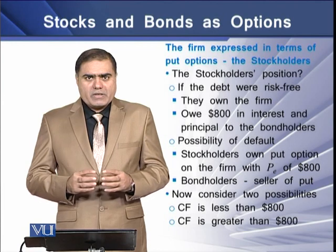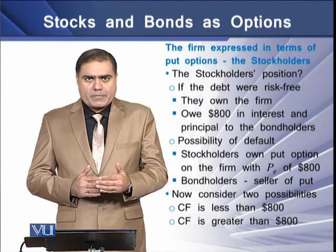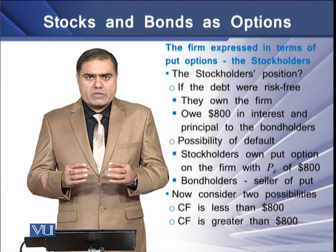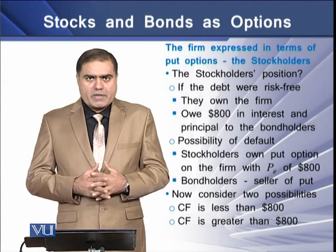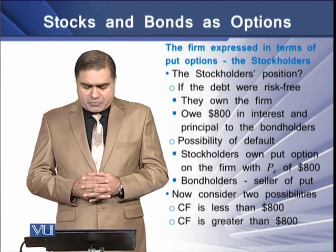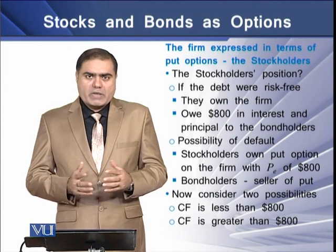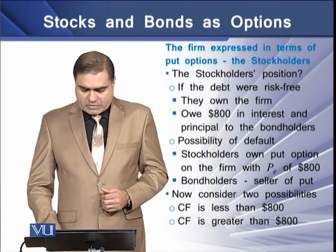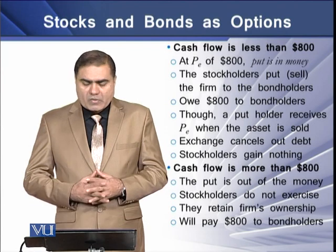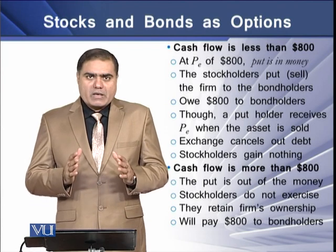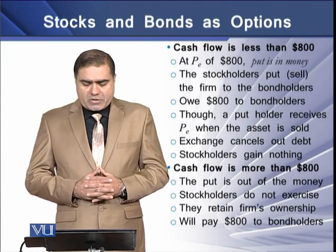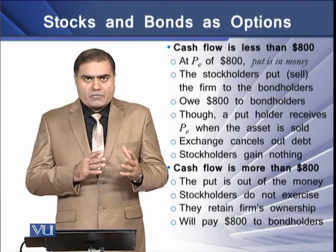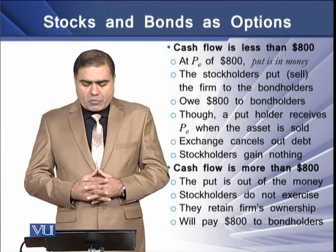Considering these two positions, we have two types of cash flows. The first is where cash flow is less than $800, and the second situation is where the cash flows are over $800. If the cash flows are less than $800, then the stockholders will put or sell the firm to the bondholders.